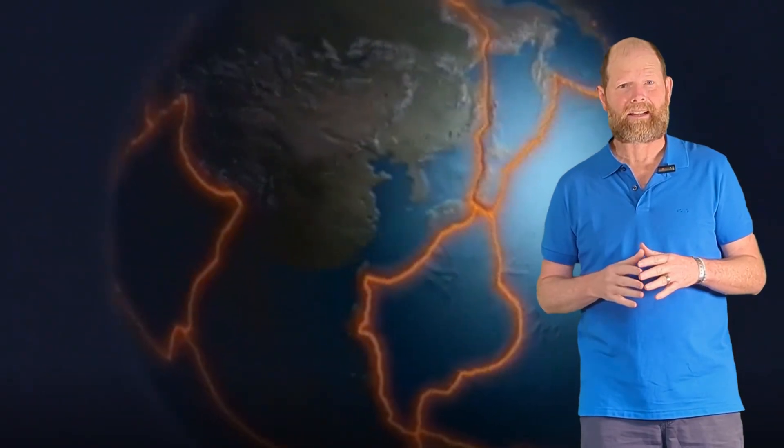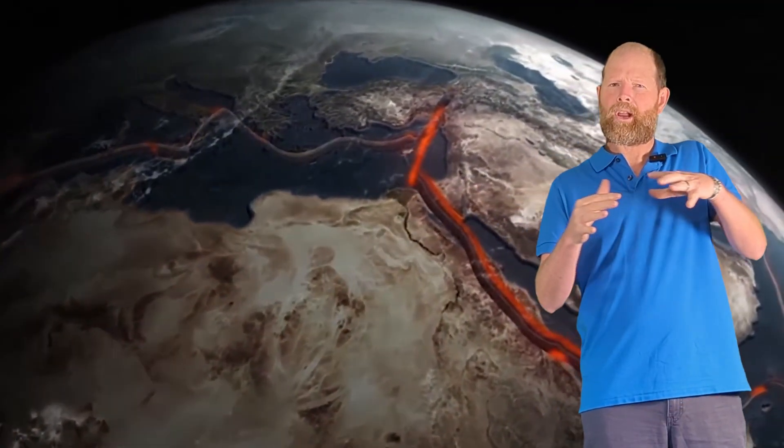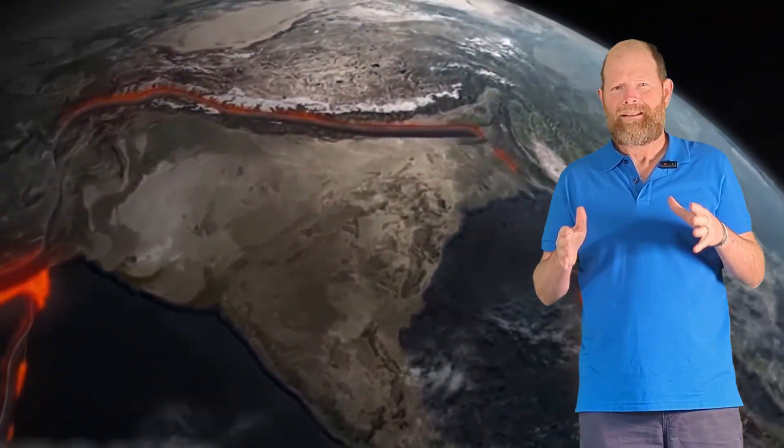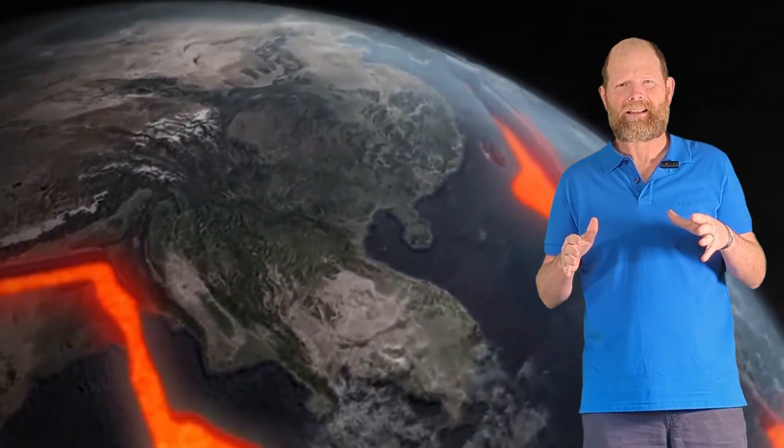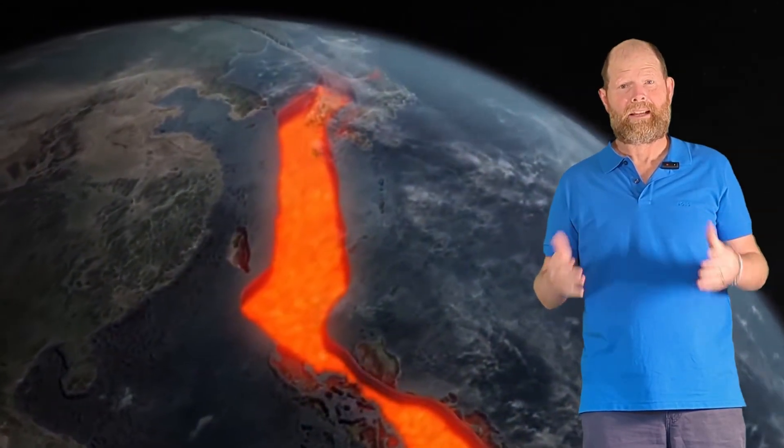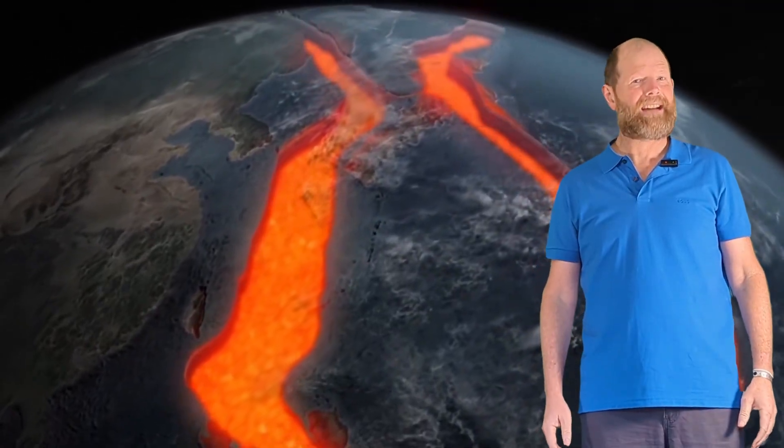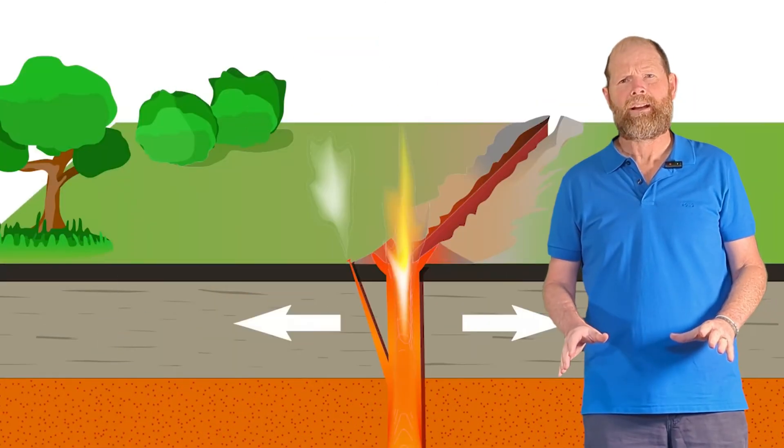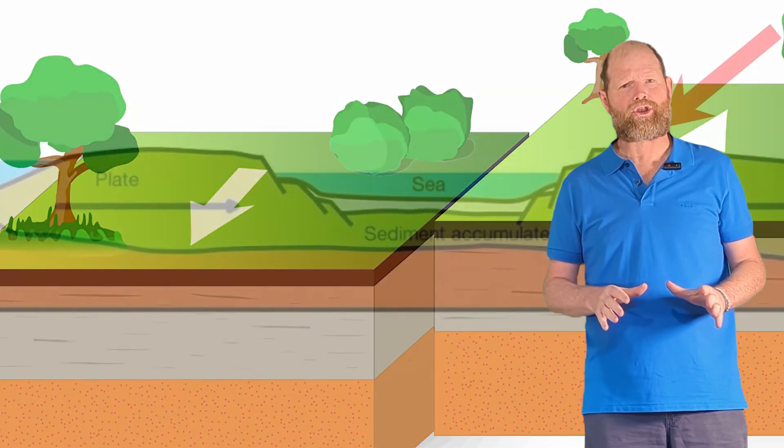One of the biggest factors in shaping the surface of the Earth is plate tectonics. Imagine Earth's outer layer like a cracked eggshell made up of massive pieces called tectonic plates. These plates are constantly moving, bumping into each other, pulling apart, sliding past each other. And where they meet, that's where the action happens. These meeting points are called plate boundaries, and there are three main types. Each type creates its own set of geological structures.